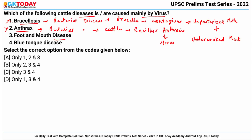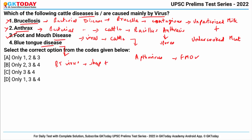Third is Foot and Mouth Disease. This is a viral infection that affects cattle and is caused by an aphthovirus called FMDV, so this is right. The last is Bluetongue Disease, which is caused by Bluetongue virus in sheep and cattle and is transmitted through small flies called midges. So this is also right, and the correct answer becomes only three and four.